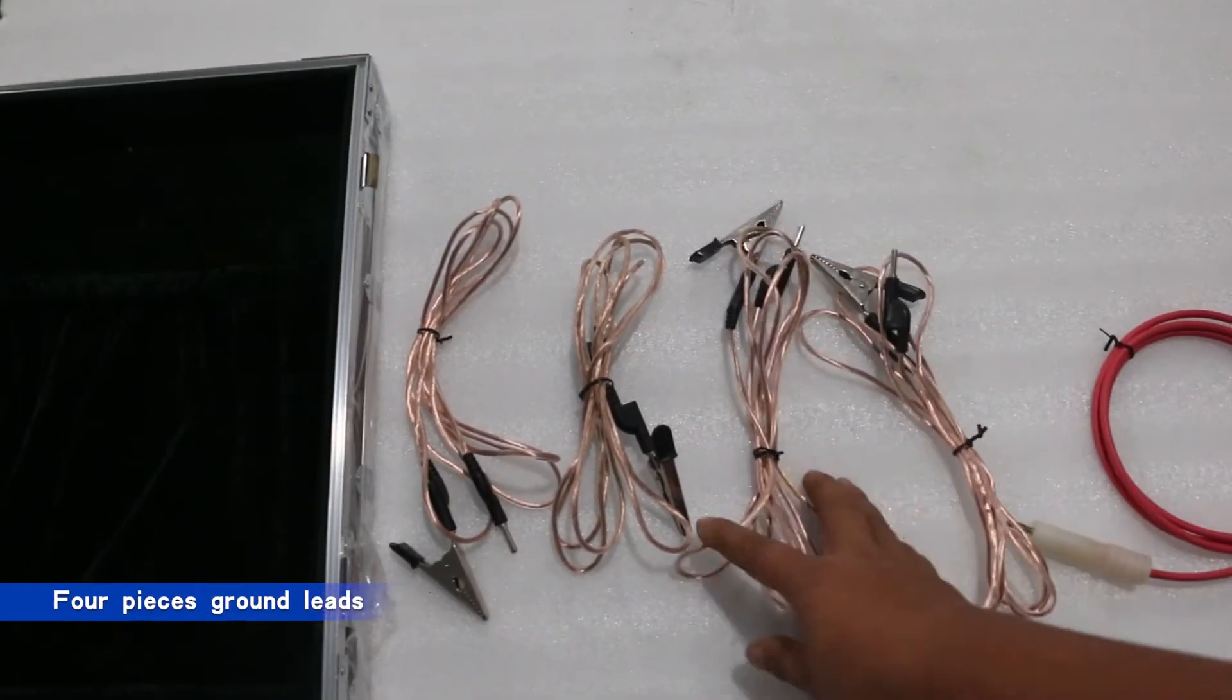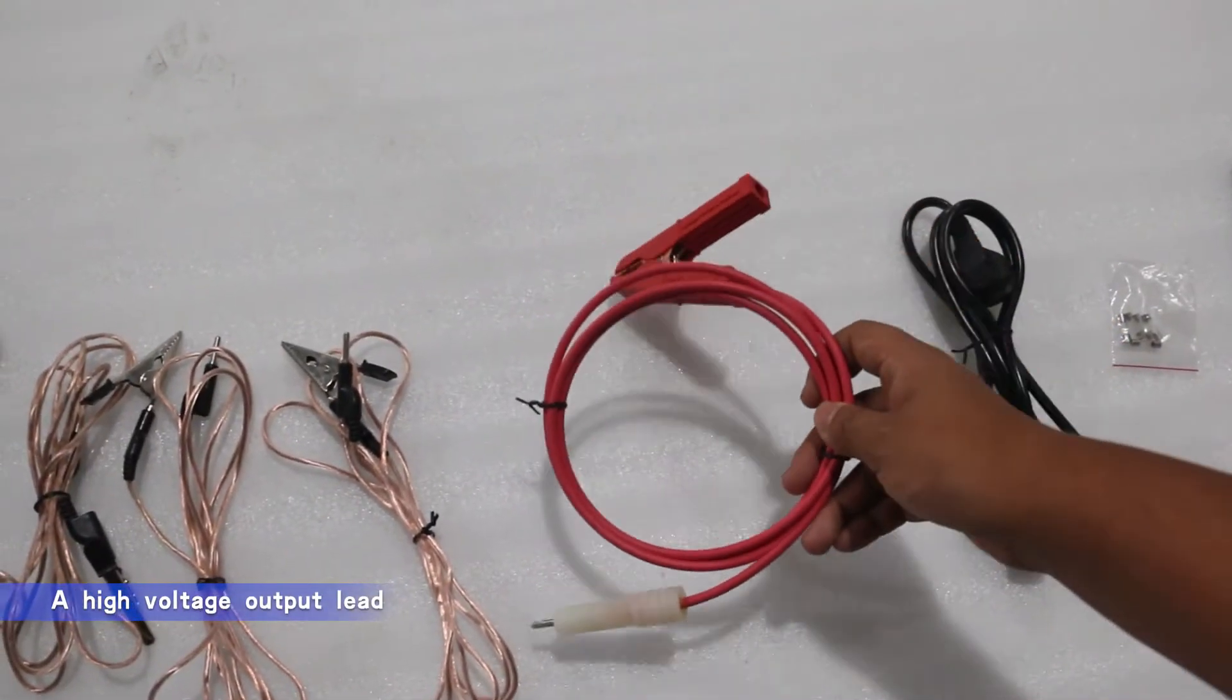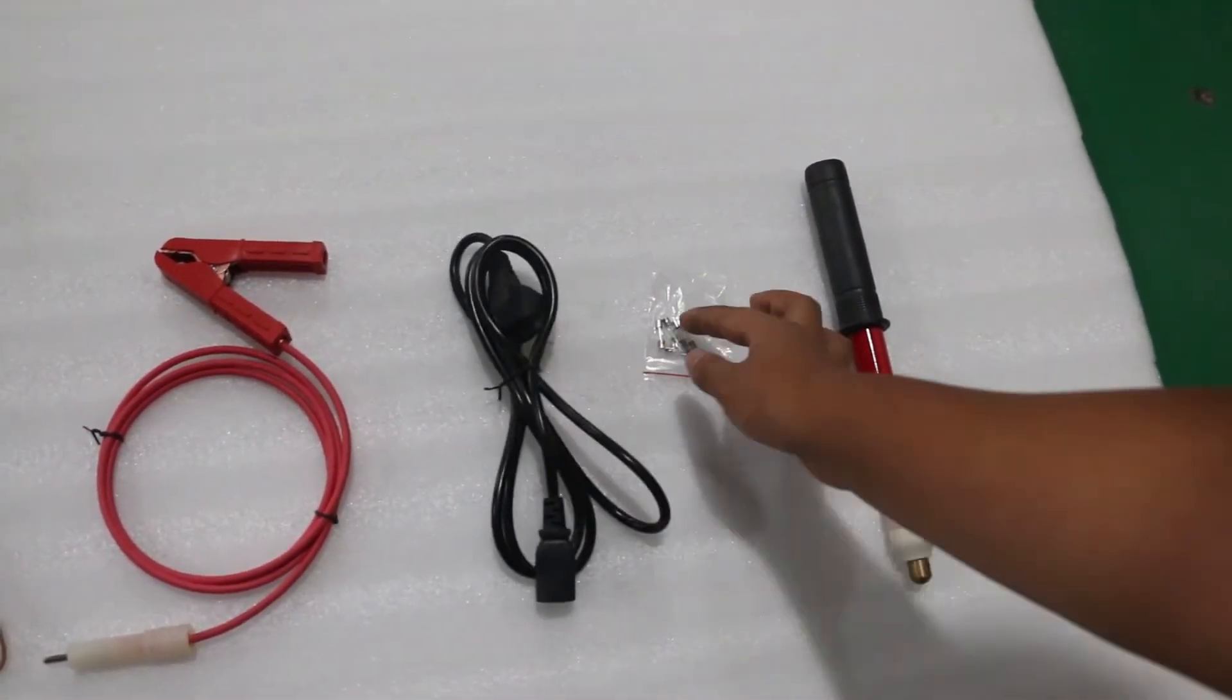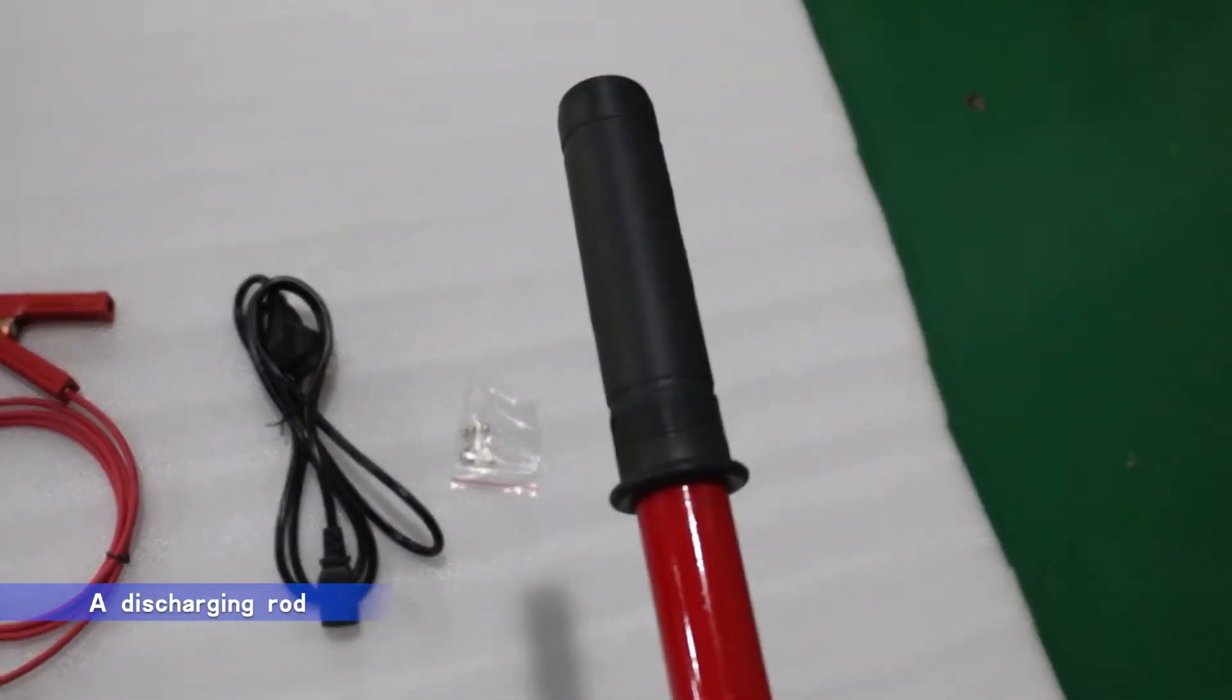The equipment includes 4-pieces ground leads, a high-voltage output lead, a power supply cable, 5-pieces fuses, and a discharging rod.